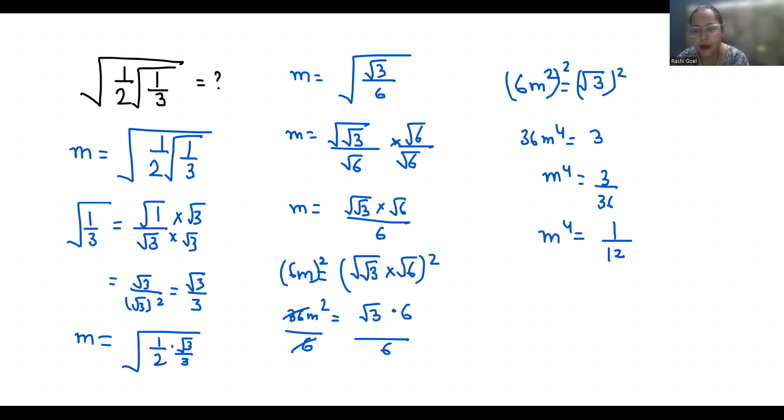M is equal to 4th root of 1 by 4th root of 12, so m is equals to 1 by 4th root of 12.